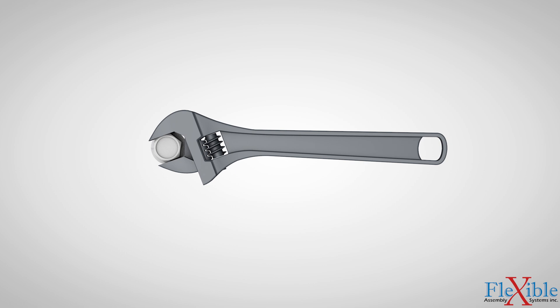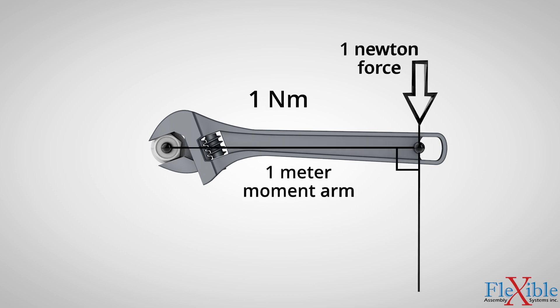But what do those units of measure mean? One newton meter is equal to the torque resulting from a force of one newton applied perpendicularly to a moment arm which is one meter long. Similarly, one pound foot is the same but using one pound of force and a one foot long moment arm.